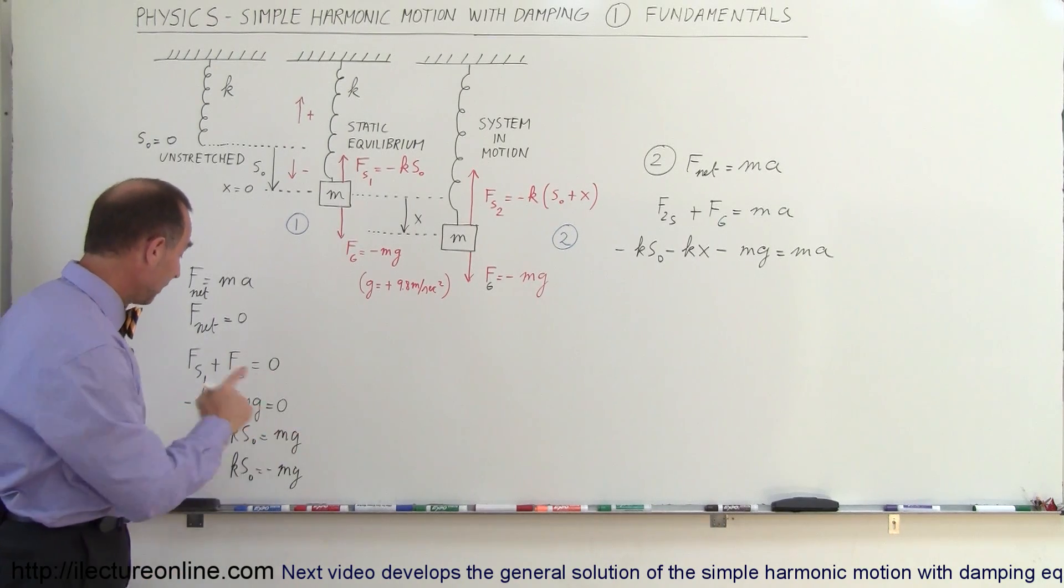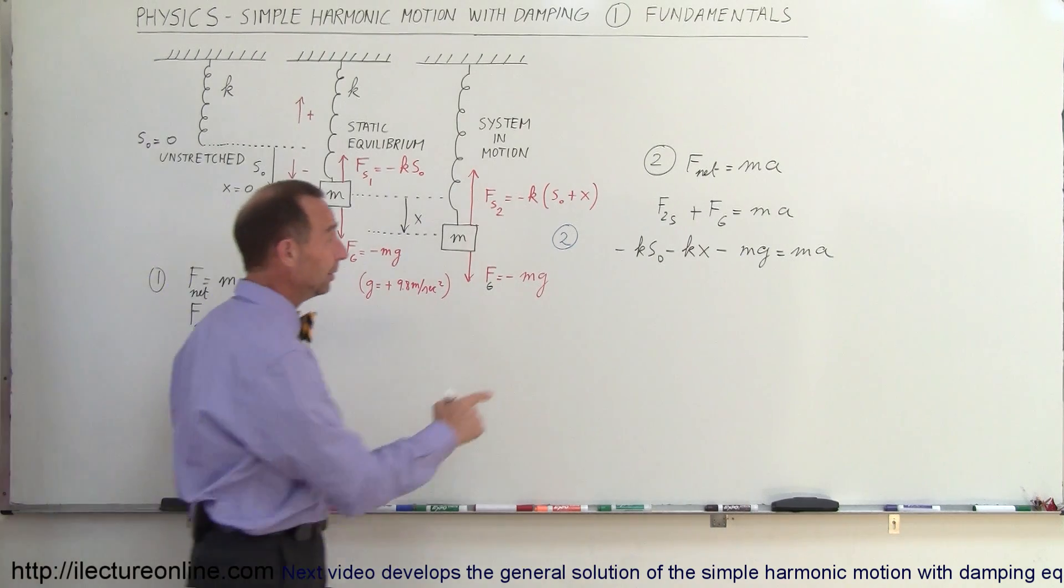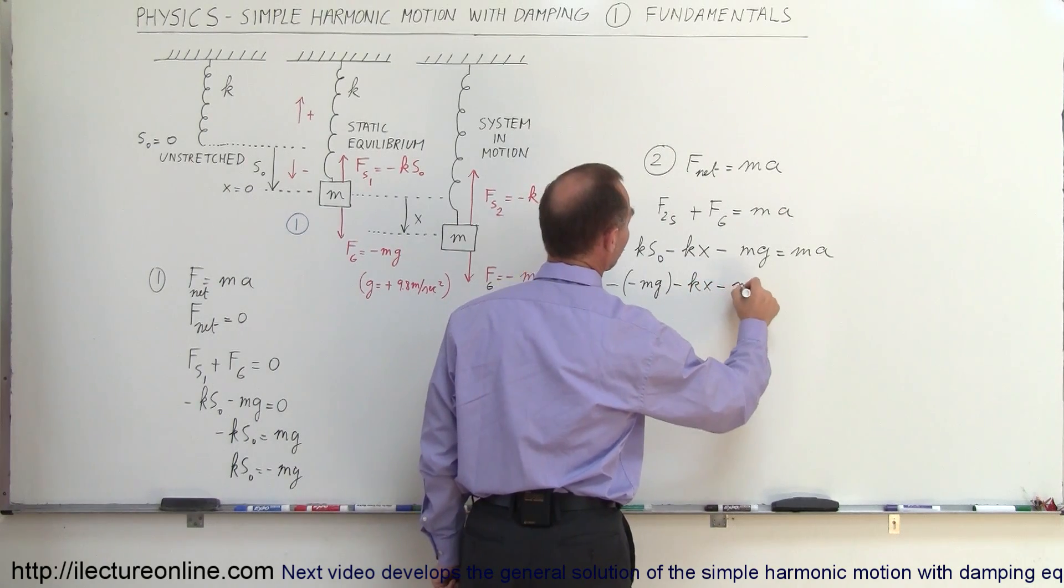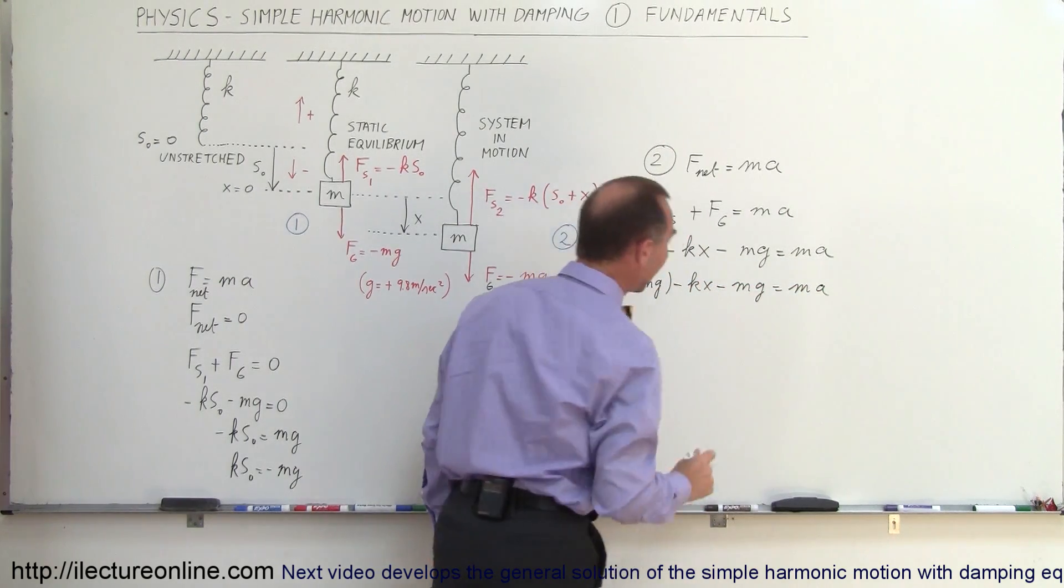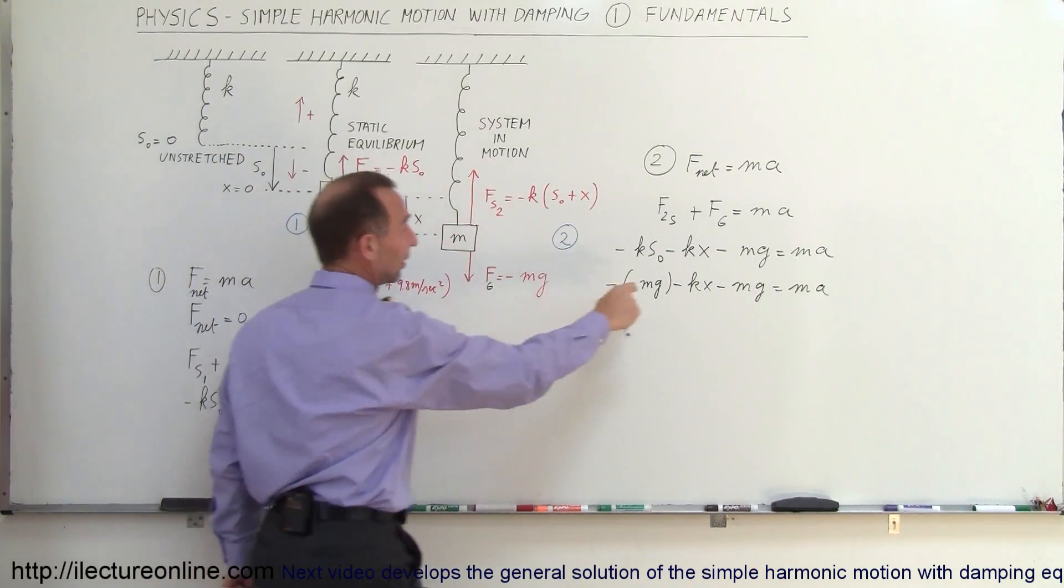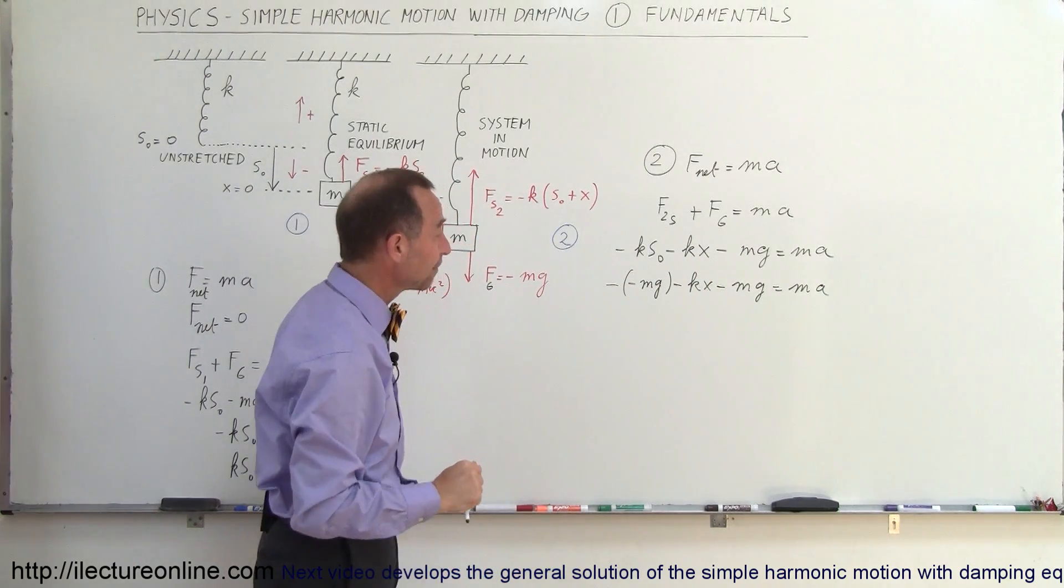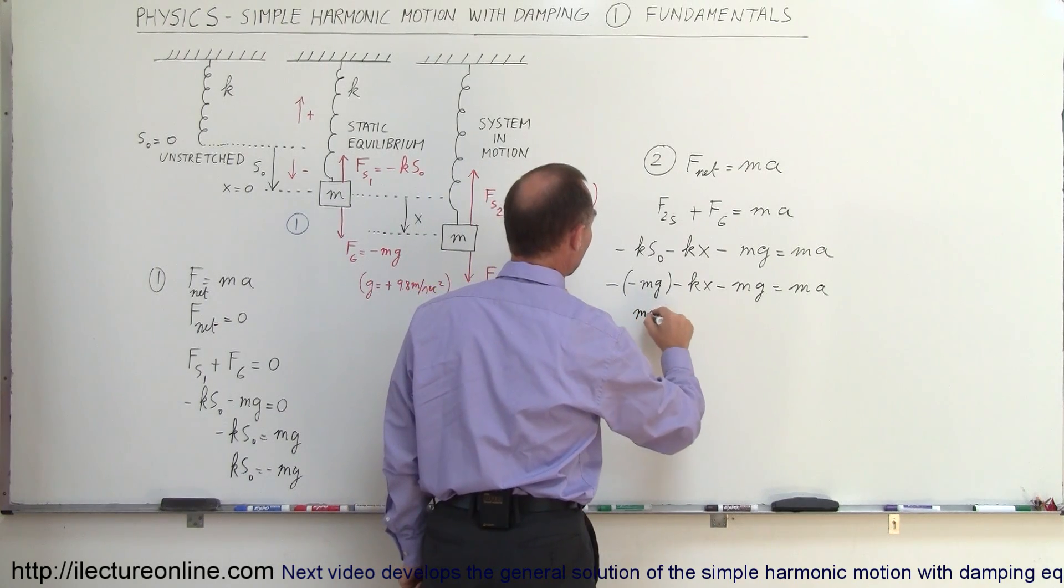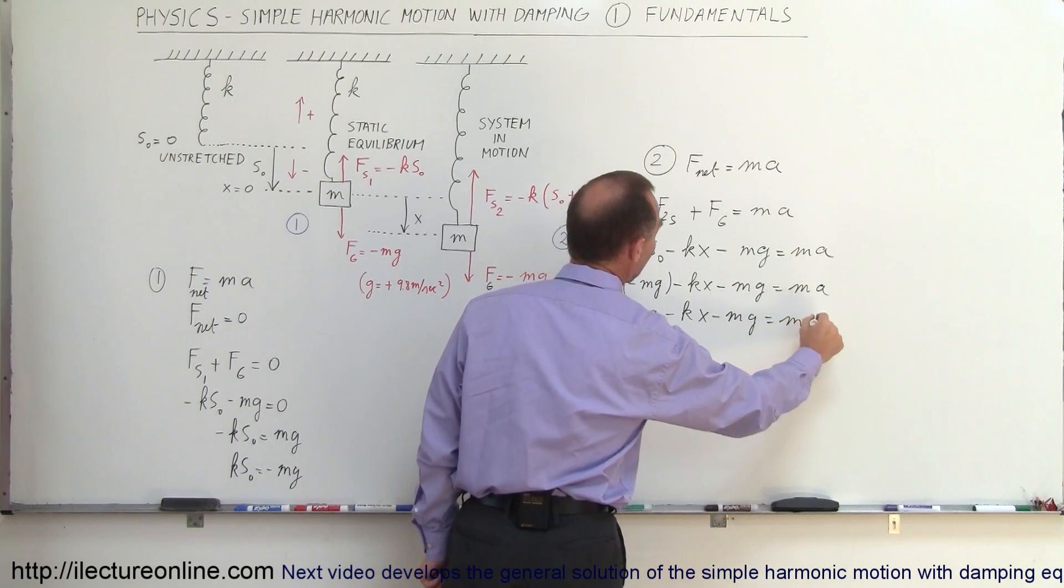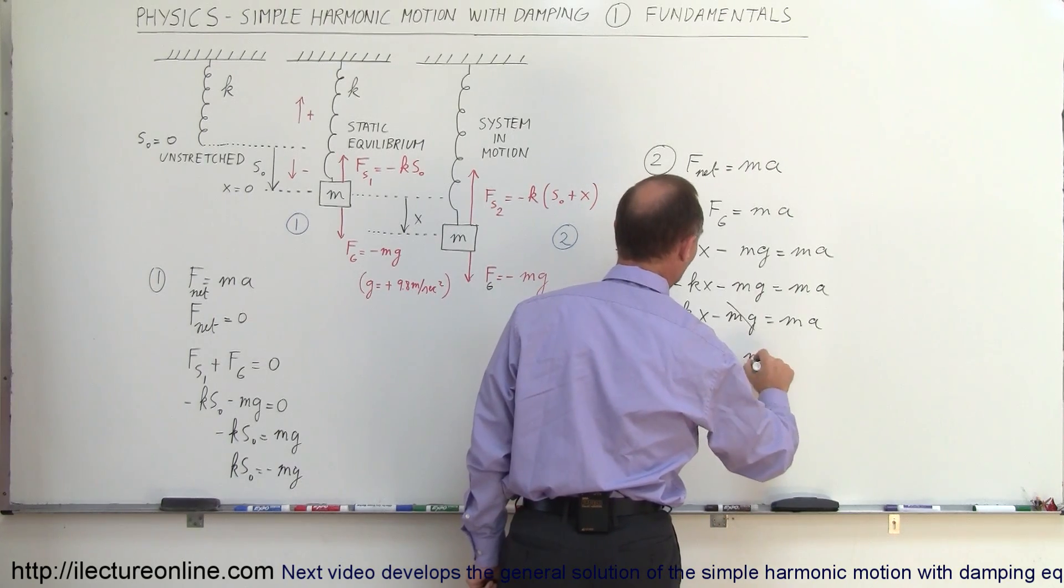Now to simplify that, I can realize that ks sub naught is equal to minus mg, so I can plug that in there. This becomes minus a minus mg minus kx minus mg equals ma. Just to make sure we have the signs correct, notice that when x is negative, this becomes a positive quantity. Minus times a minus becomes a plus, so we have mg minus kx minus mg equals ma. Notice that the mg's cancel out, and so we're left with minus kx equals ma.